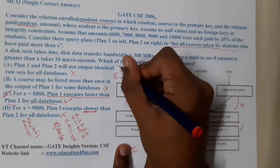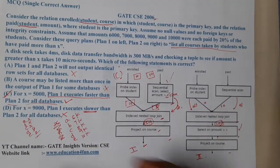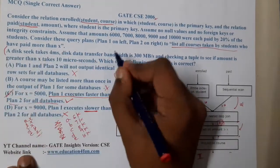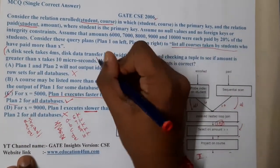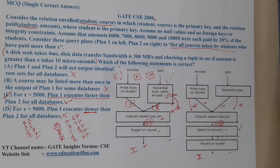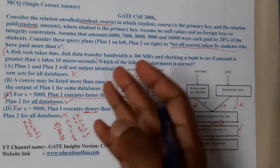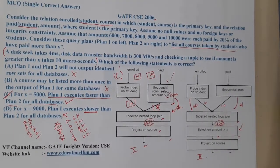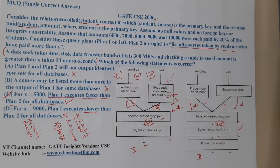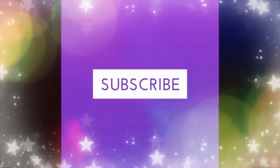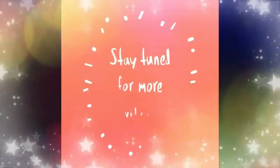Therefore, C is the correct answer. The disk seek time, bandwidth, and tuple-check time given in the question are just distractors — they have no relevance to choosing between the plans. I hope everyone got a clear idea on this question. Let us continue with the next question in the next lecture. Thank you, like, share, and subscribe for more videos.